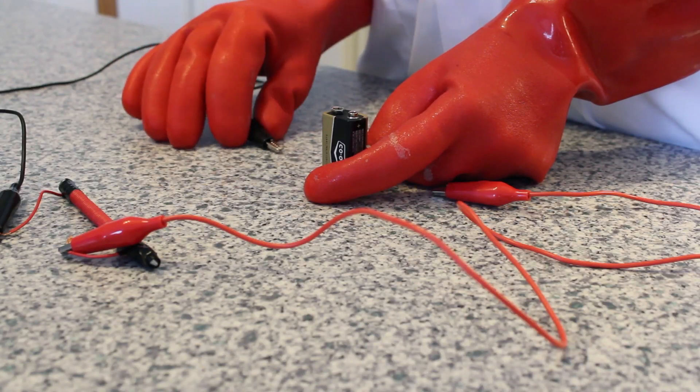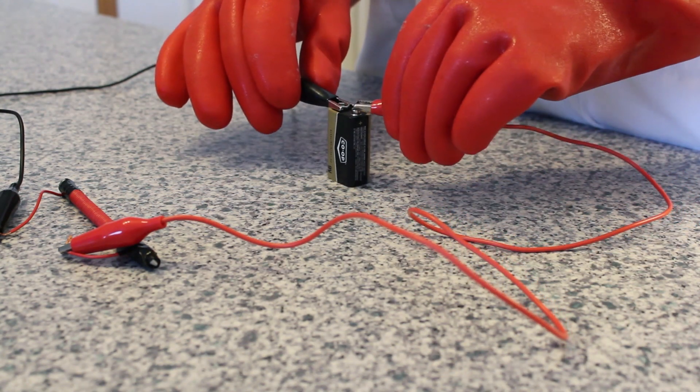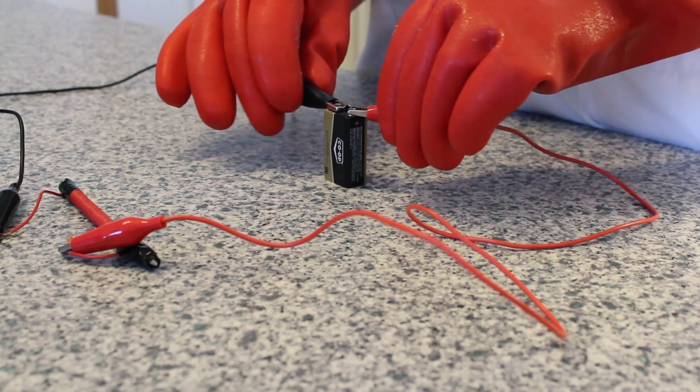Then we can prepare one end by attaching it with the alligator clips to the cell. And then as soon as we make the last connection, the electromagnet will be turned on.